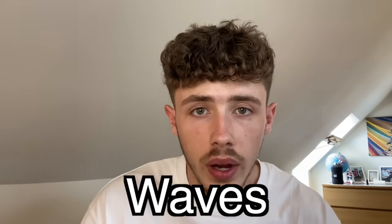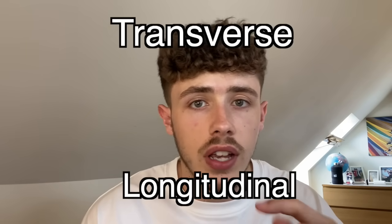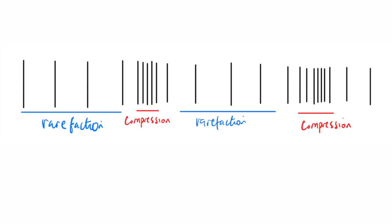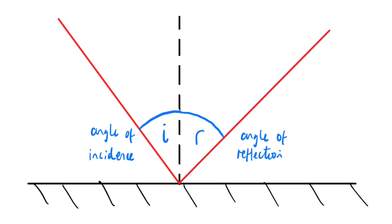Topic number two is waves. There are two types: transverse waves and longitudinal waves. For a transverse wave, you need to understand the amplitude, wavelength, peak, trough, and frequency. For longitudinal waves, where it gets close together is called compression and separation is called rarefaction. When it comes to reflection and refraction, you need to understand the angle of incidence and the angle of reflection or refraction, and be able to draw wave front diagrams when waves pass from air into water or glass into air.